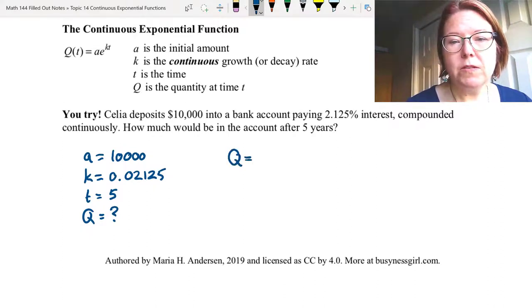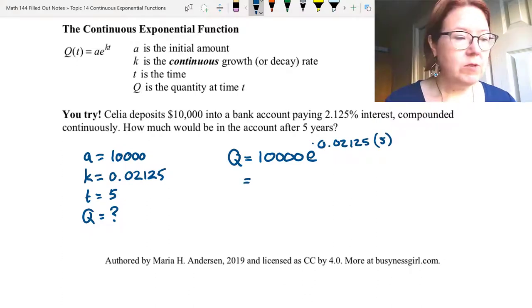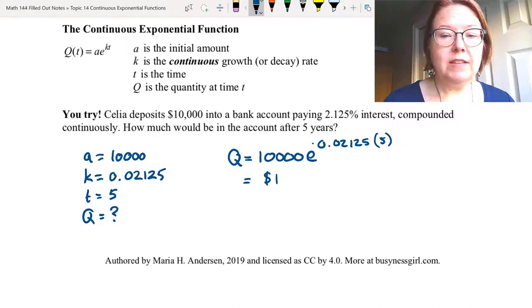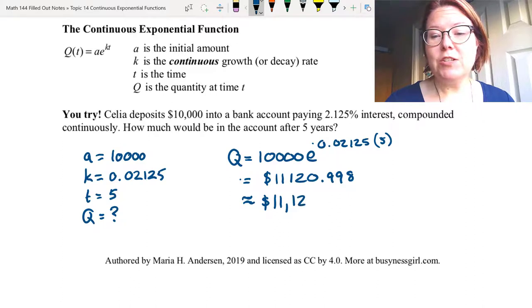So Q equals 10,000 times e raised to the 0.02125 times five power, which results in 11,120.998 or rounding, let's say $11,121.